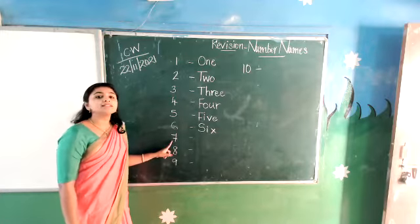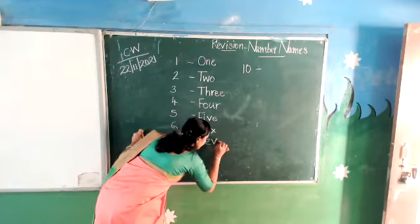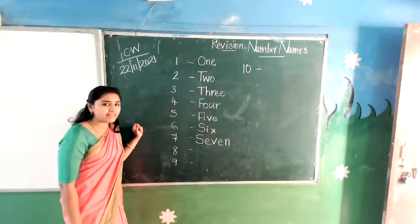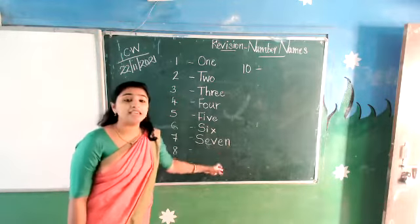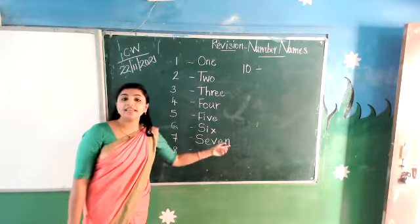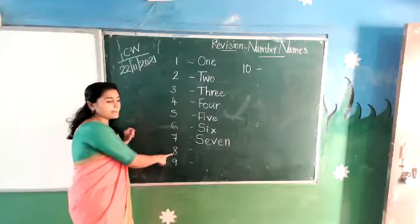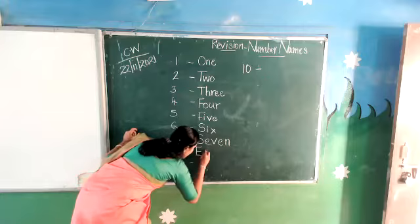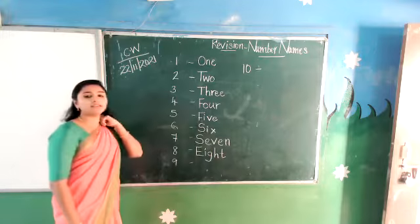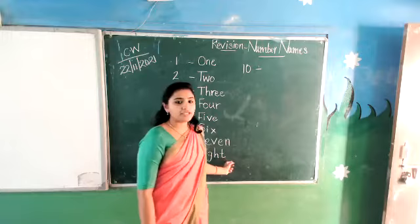And number 7. What is the spelling of 7? S-E-V-E-N — 7. The spelling of 7 is S-E-V-E-N. Then number 8 — after 7, the next number is 8. E-I-G-H-T — 8. E-I-G-H-T — 8.